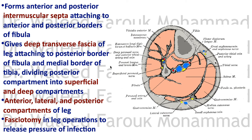In surgery, after operating on the leg, a fasciotomy — incisions in the fascia — is performed because the compartments are very tight. After surgery, inflammatory exudate increases tension inside the compartments, potentially compressing the muscles to the point of ischemic necrosis. To prevent this, a fasciotomy of the deep fascia of the leg is done to release the pressure from the post-surgical exudate.